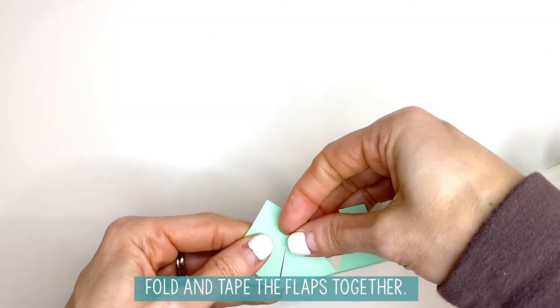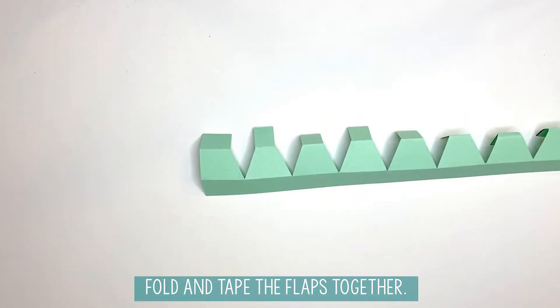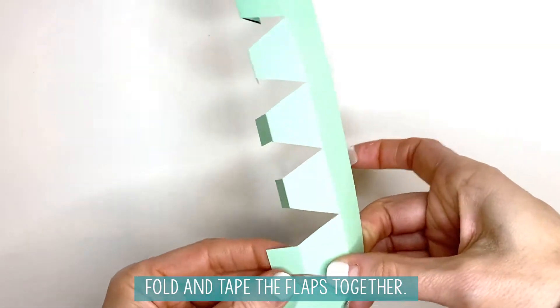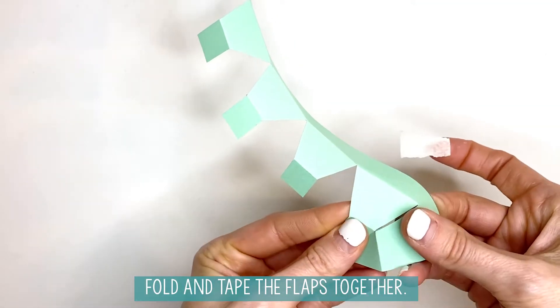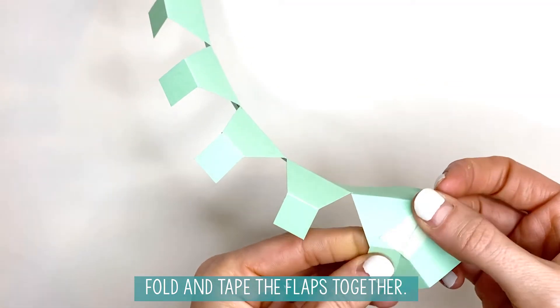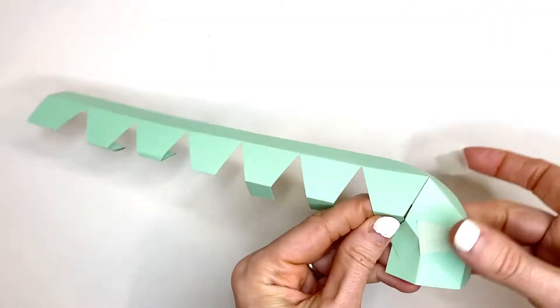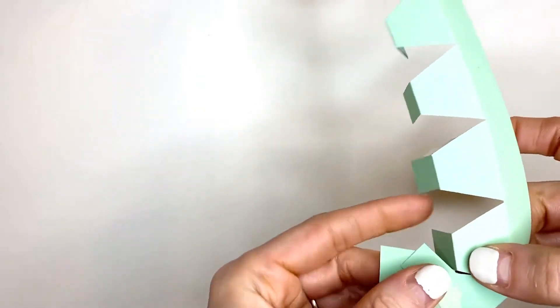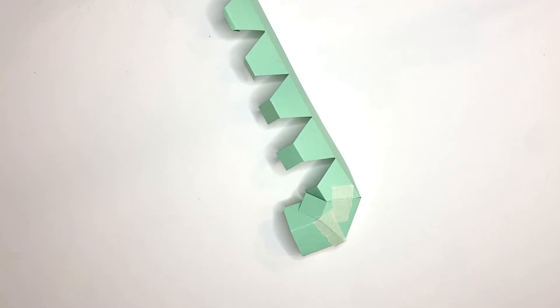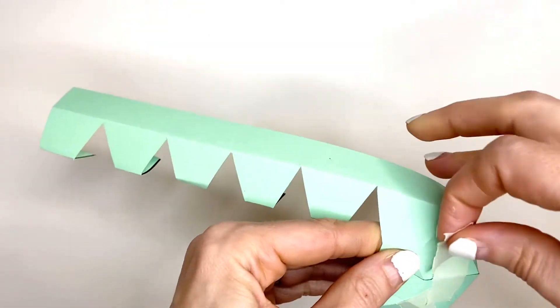You want the lines right here to line up and you're going to use little pieces of tape right here in the center to get those taped together. You'll go through and do one at a time until you have them all taped together.